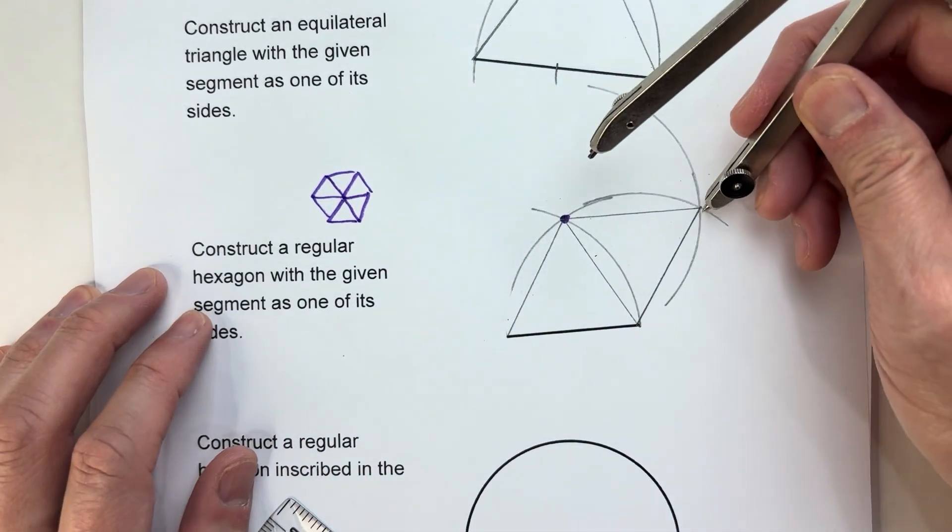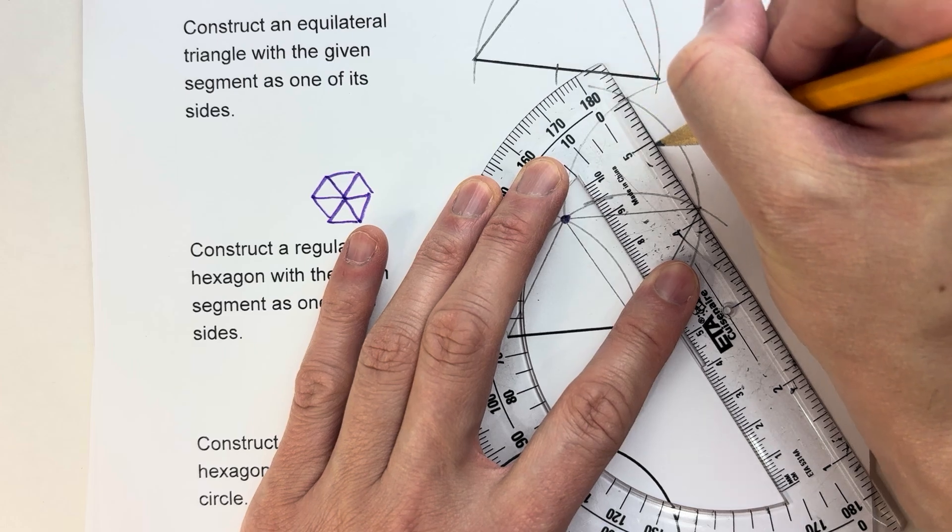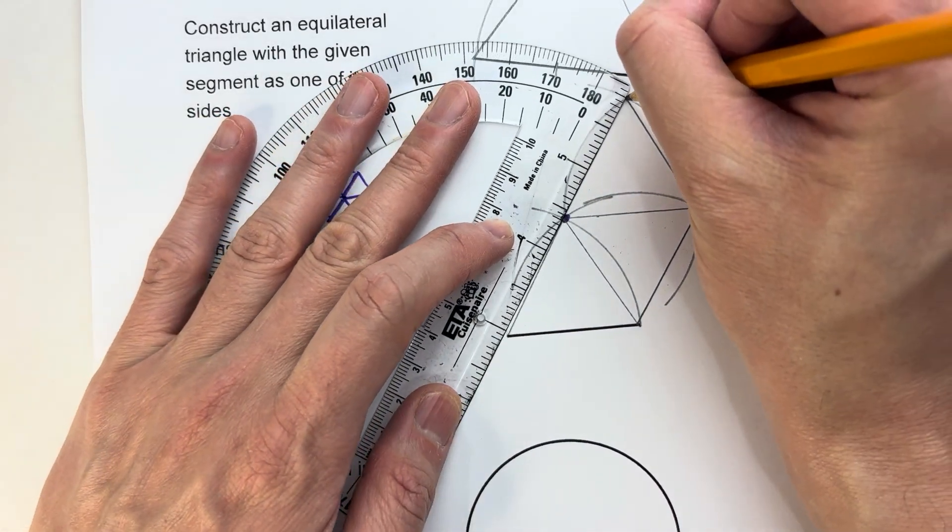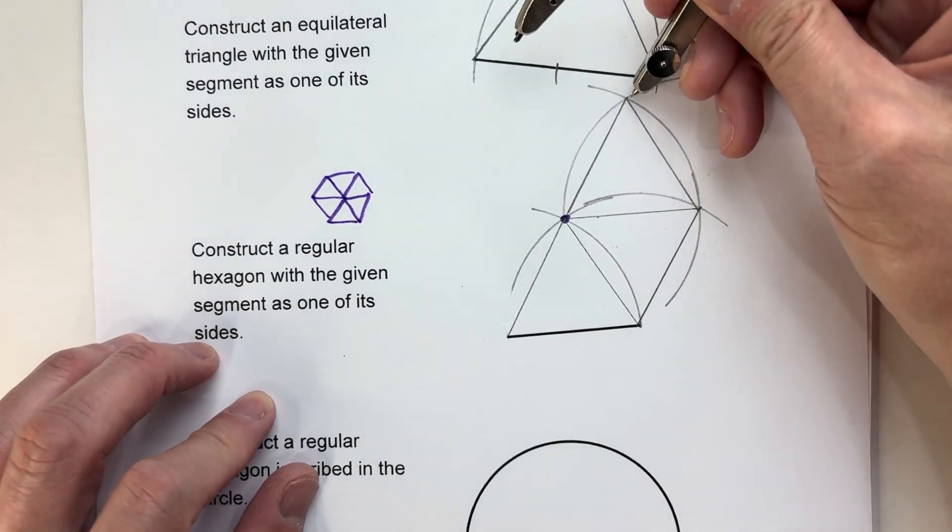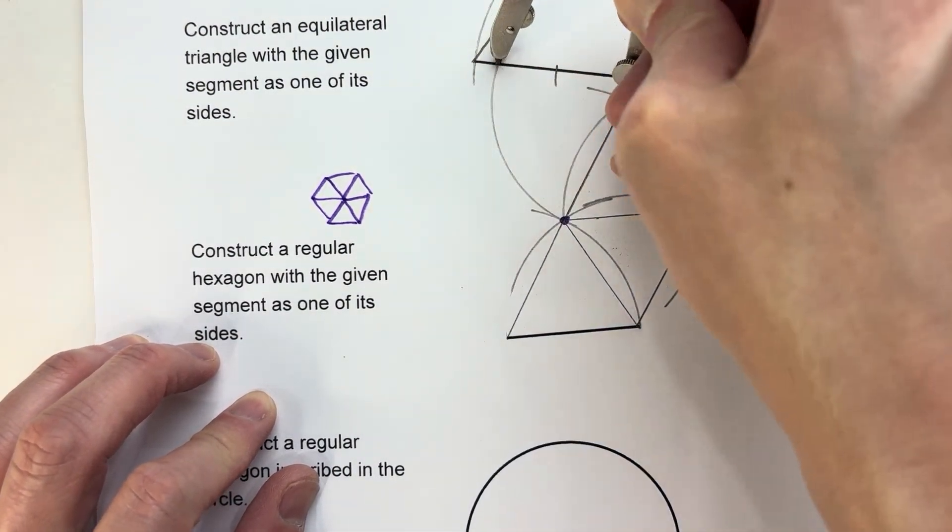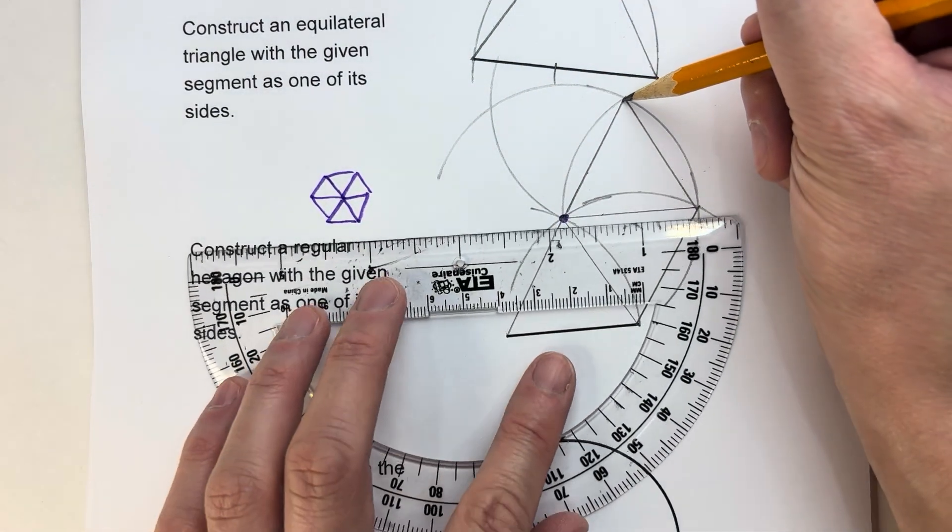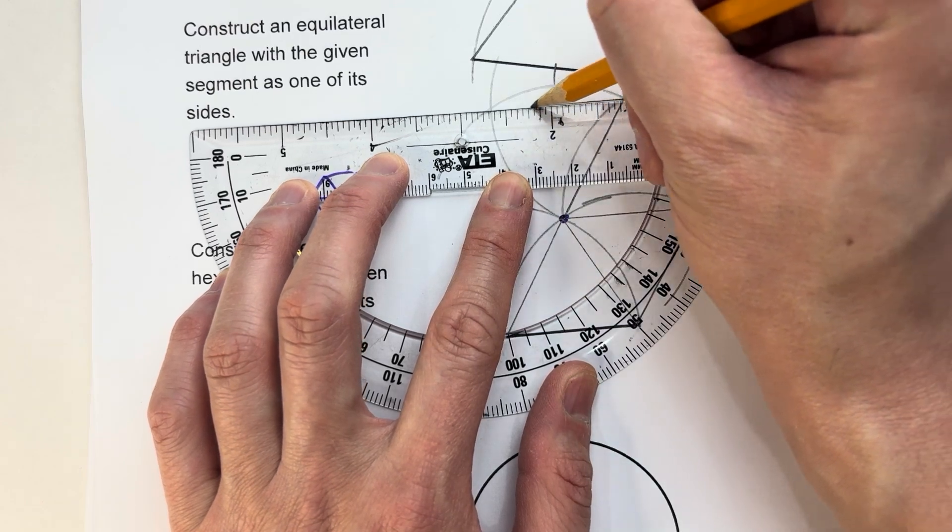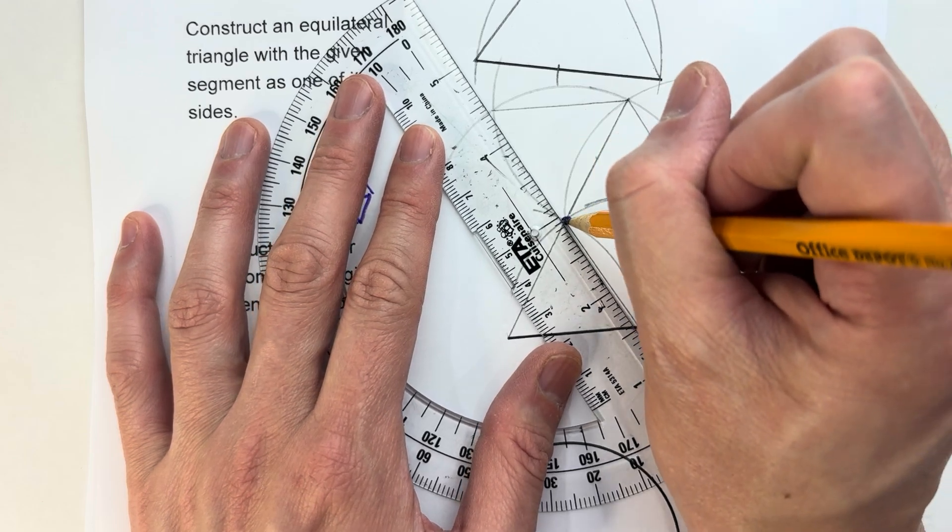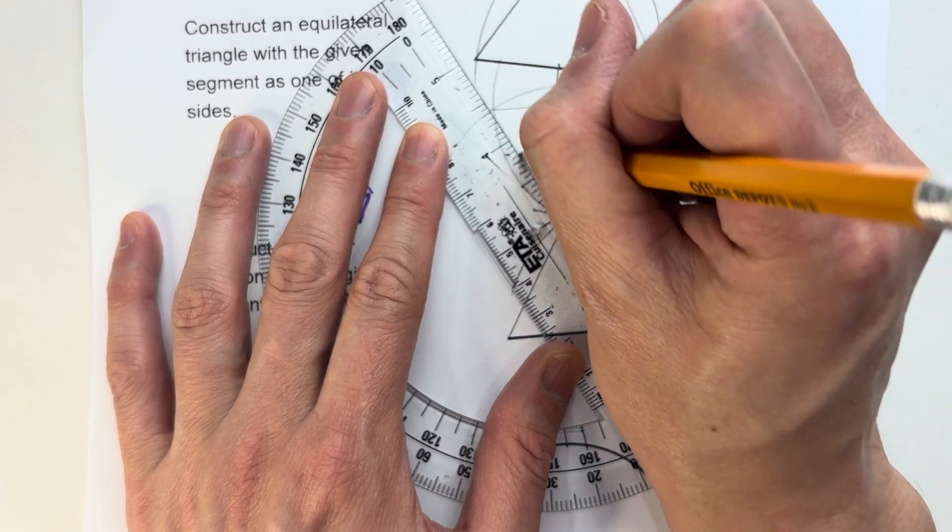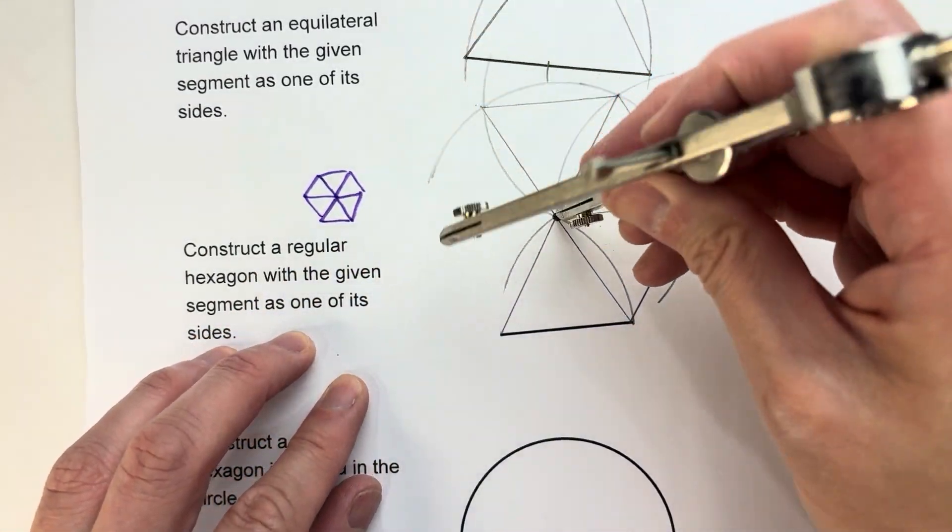Here's my next equilateral triangle. And the next one. As you're doing this, you start to notice some patterns. You start to see right away, this circle seems to be going all the way around the hexagon. Maybe that could have saved me some time.